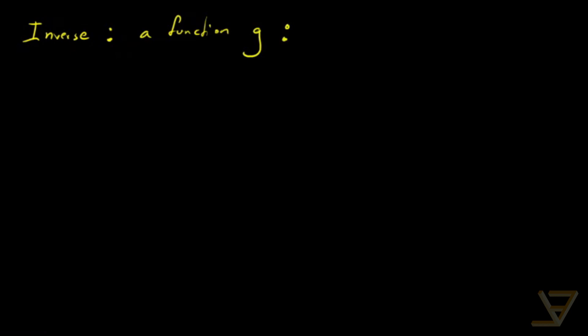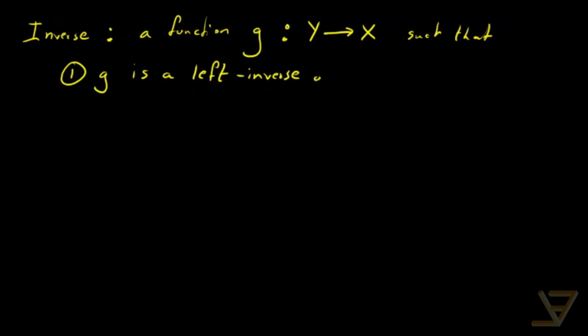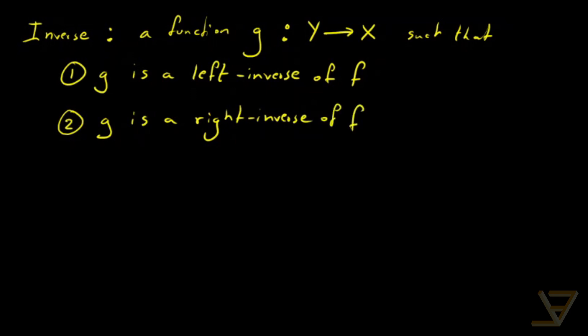The theorem we want to prove is that a function is bijective if and only if it has an inverse. So let's define what an inverse is. An inverse is a function g from Y to X — so originally we had f going from X to Y, and g reverses the order — such that g is both a left inverse and a right inverse of f.